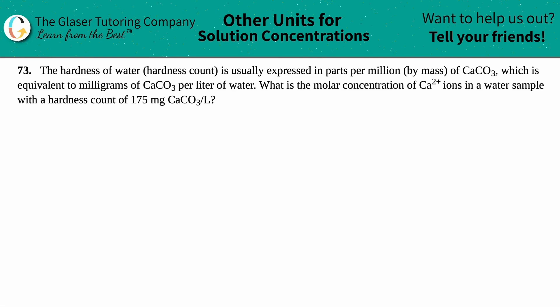Number 73. The hardness of water — the hardness count — is usually expressed in parts per million by mass of CaCO₃, which is calcium carbonate, equivalent to milligrams of calcium carbonate per liter of water. What is the molar concentration of Ca²⁺ ions in a water sample with a hardness count of 175 milligrams of calcium carbonate per liter?